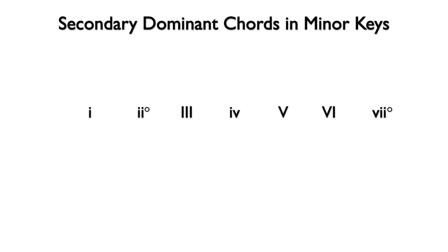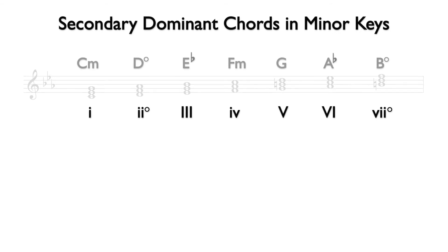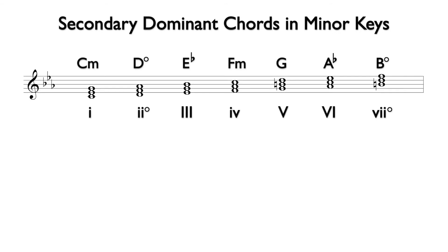Here are the Roman numerals for the most common triads. Here are those chords notated in the key of C minor. We will notate the dominant chords that lead to each of these diatonic triads.